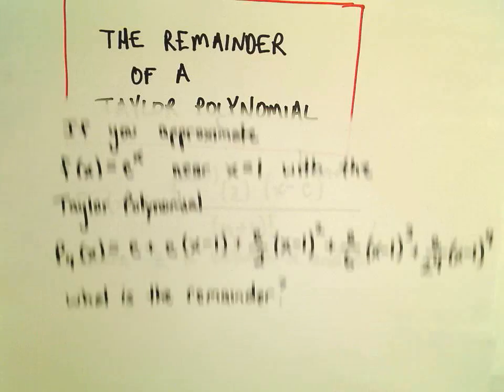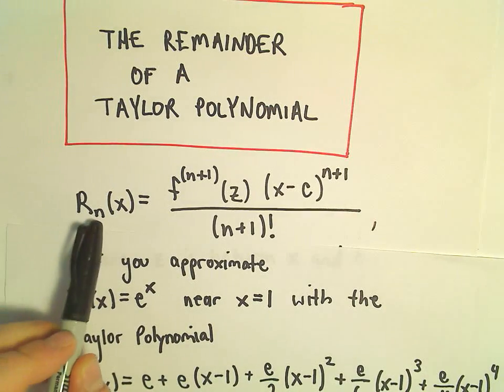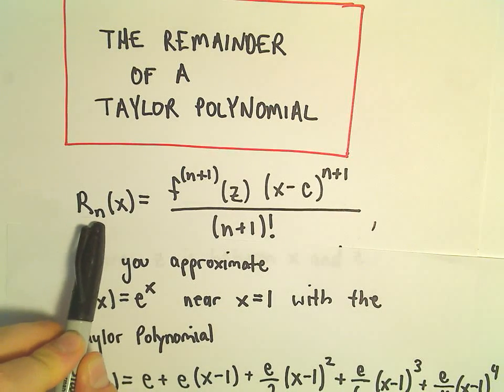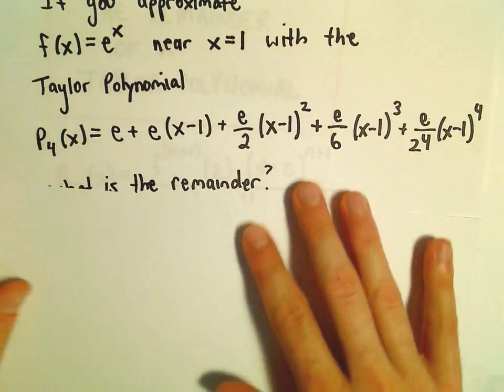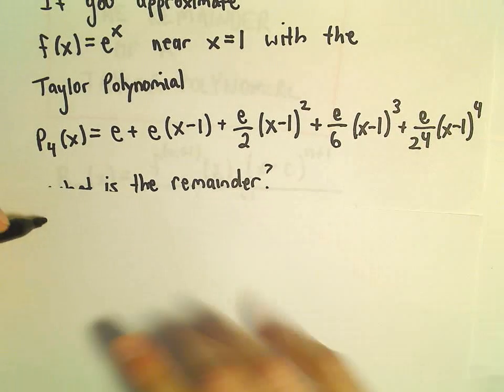So in our case, we're figuring out the remainder associated with a 4th degree polynomial. So we've gone out to degree 4.